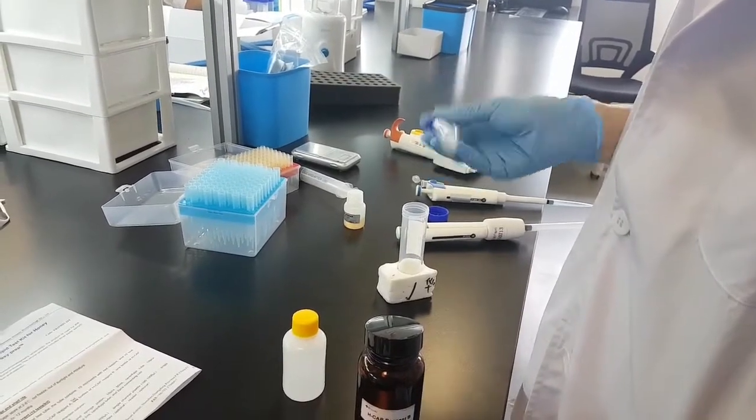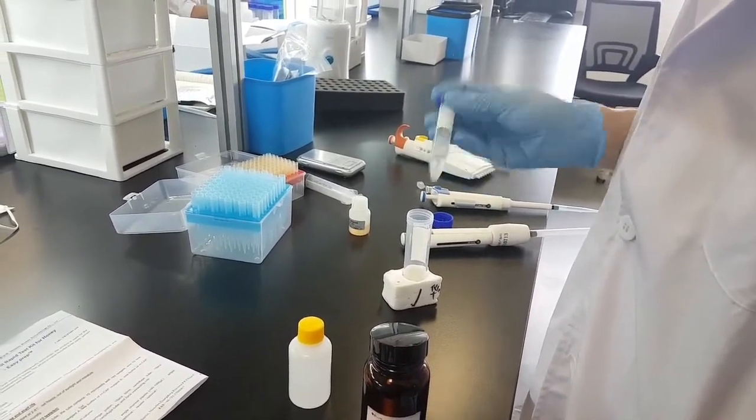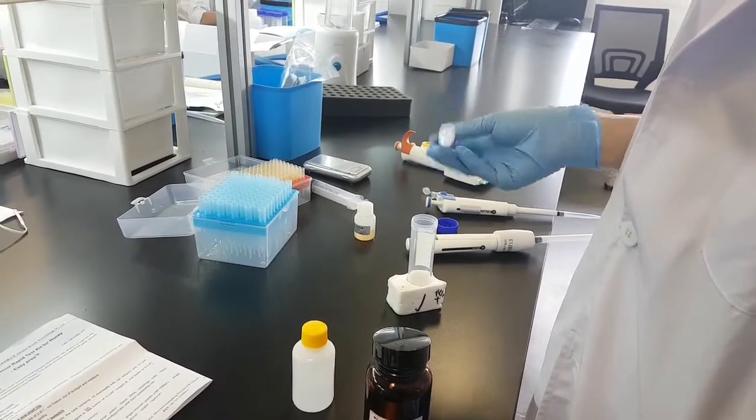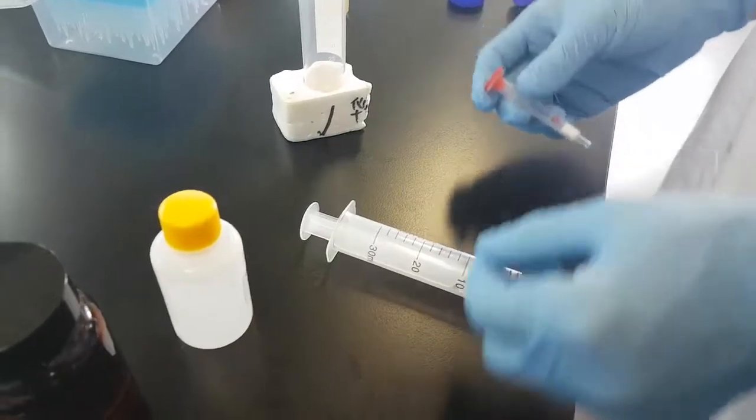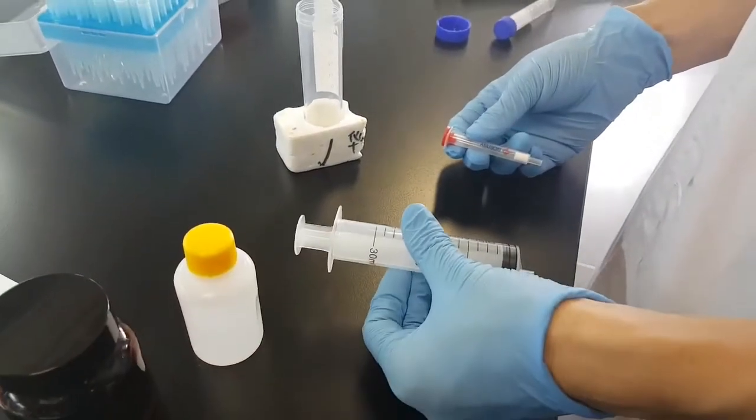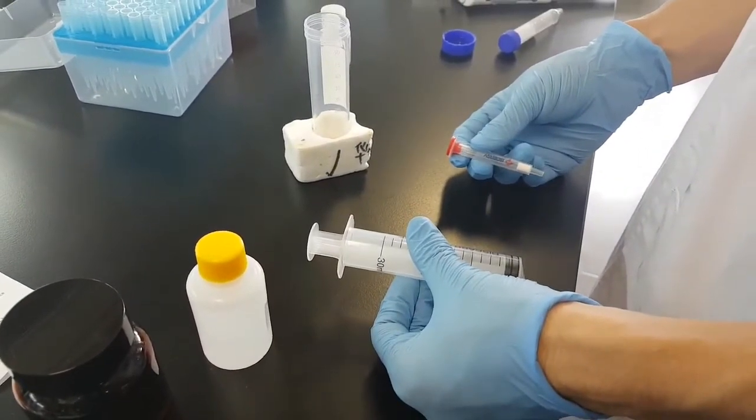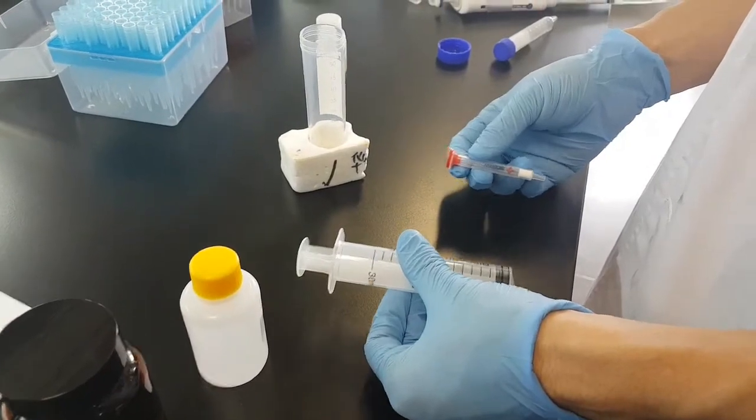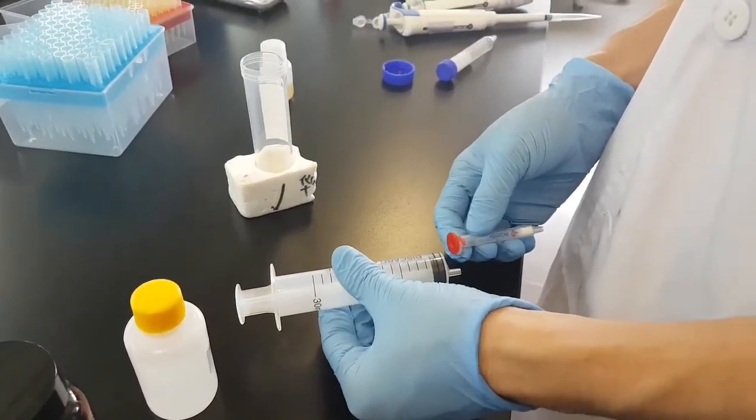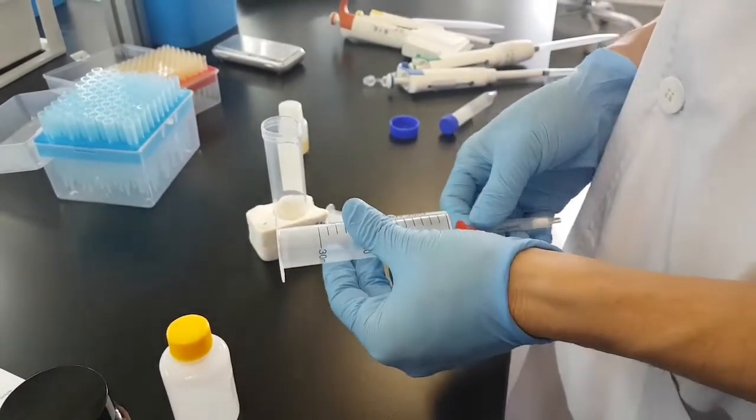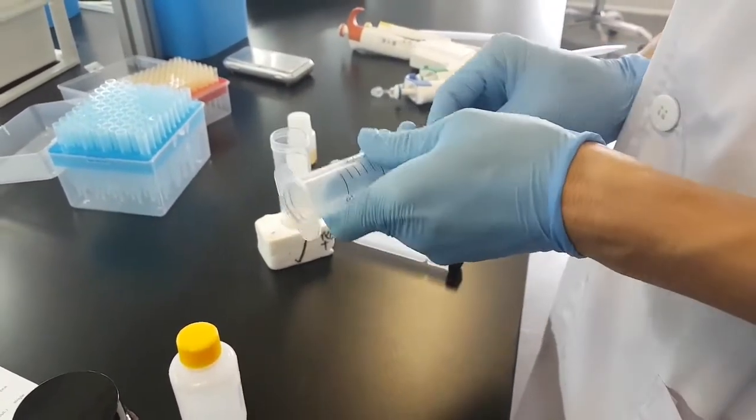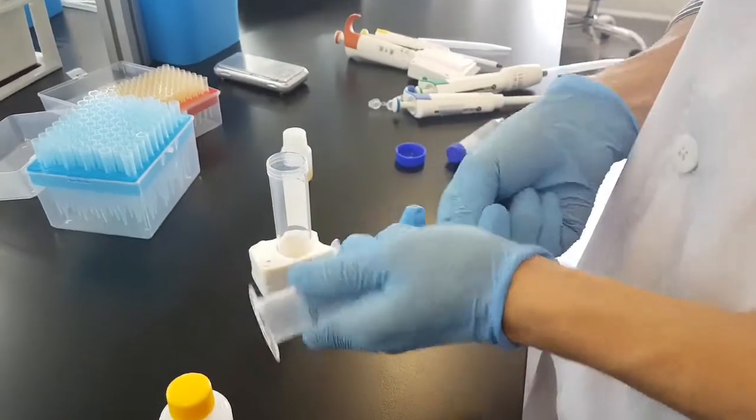Now first thing, we have connected the syringe with the piston in this way. Now we have prepared the extraction column. Take out the piston, connect the extraction column.